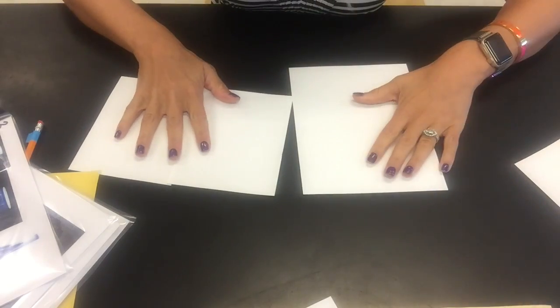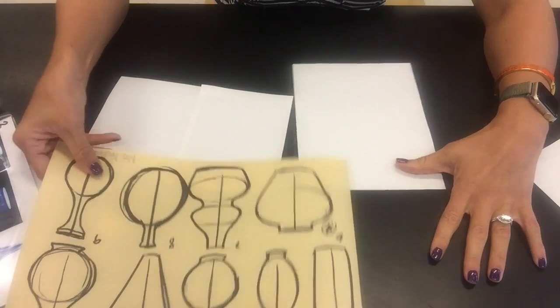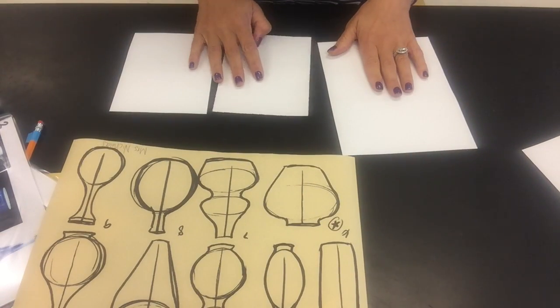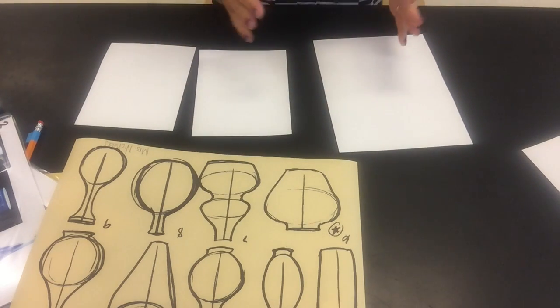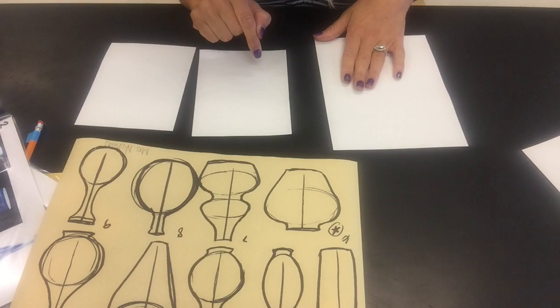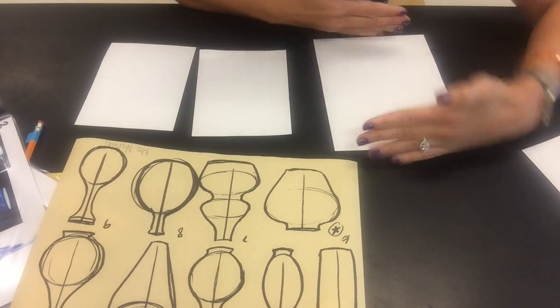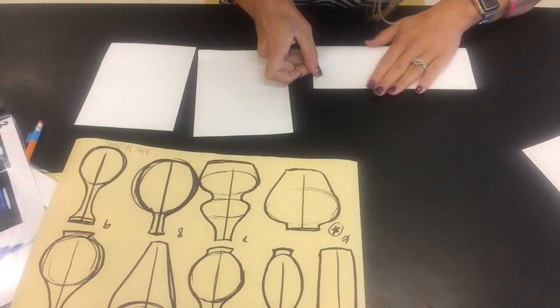Okay, so I have my sketch paper here with the shapes that I'm going to focus on, and I have my three pieces of paper here in front of me that I'm going to use to draw my good vases. Now I'm going to fold them all perfectly in half. I would like my vases to be taller than wide, so I'm going to fold them hot dog style. This is long like this, so I'm going to fold that in half. I'm going to fold these two in half as well.